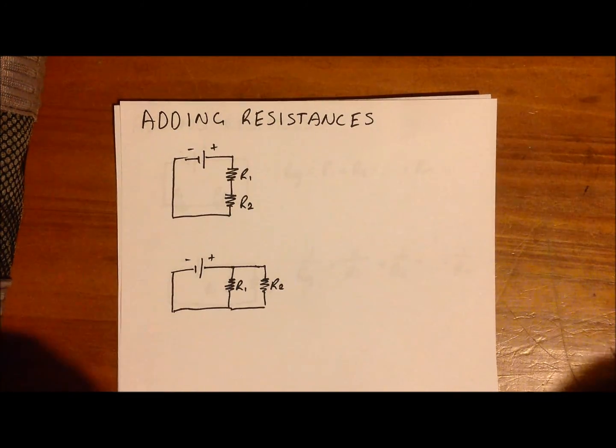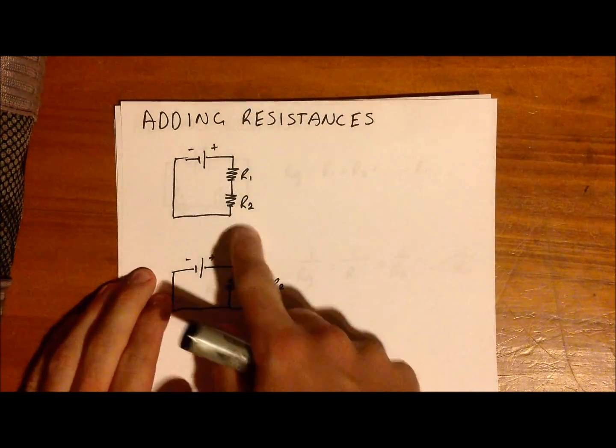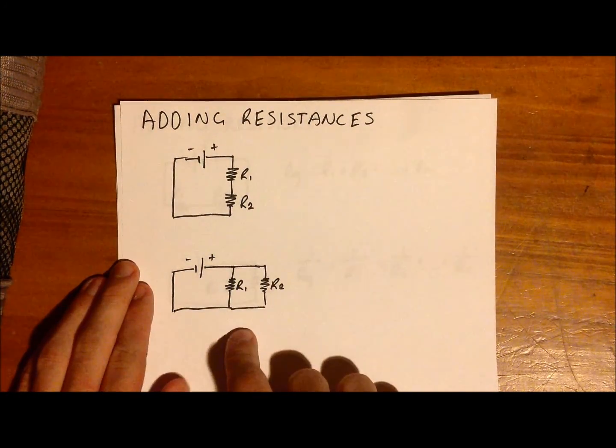we can add resistors together to find an equivalent or a resultant resistance. There are two ways in which we can add resistors together. The first way is to add them if they're in a series circuit, and the second way to add them is if they're in a parallel circuit.